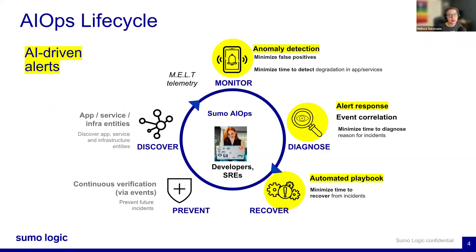This slide demonstrates the lifecycle of our AI ops features. It starts with the discovery stage, where you see the app, the service, and the infrastructure entities — depicted by our service map. This step involves identifying all the application services and infrastructure entities within your environment. When you're using our tracing technology, we can create all of these service maps and then gather telemetry data.